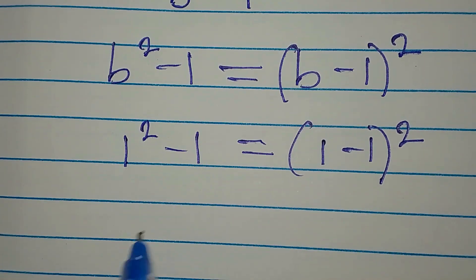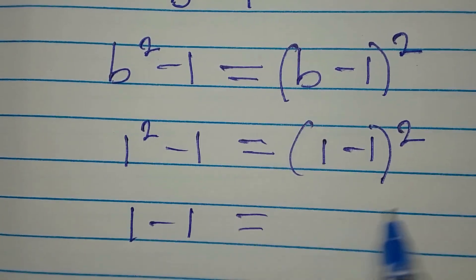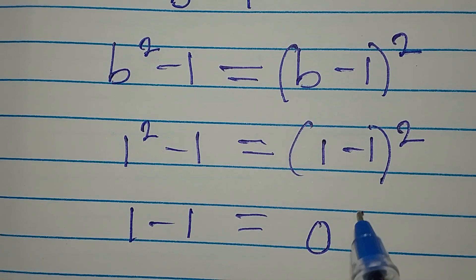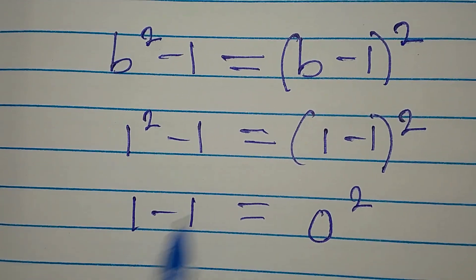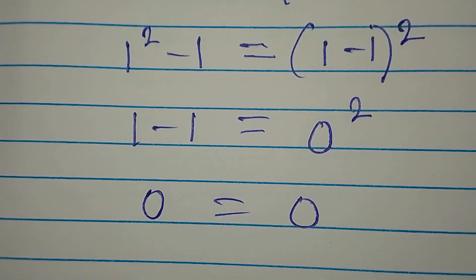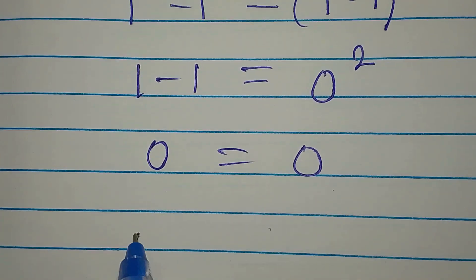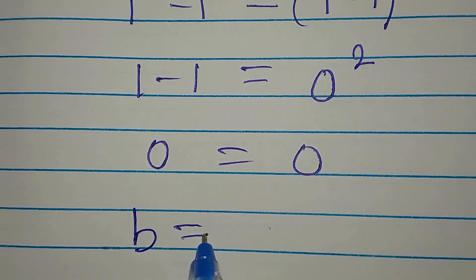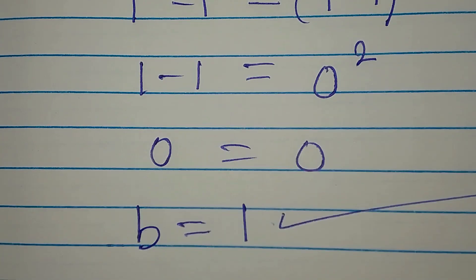So 1 squared is 1 minus 1. Then 1 minus 1 is 0, and this is square on it. 1 minus 1 is 0, and 0 squared is 0. So this means that b to be equal to 1 satisfies the equation.